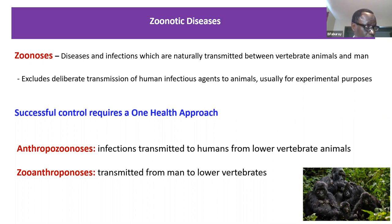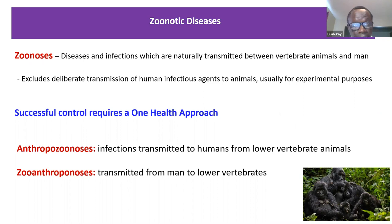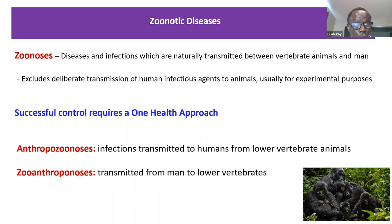Mountain gorillas in Rwanda nearly became extinct because of measles — transmitted from tourists visiting those places. It nearly wiped out their population. Even in the case of COVID-19, there was a case at the Bronx Zoo in New York where an attendant apparently transmitted COVID to a tiger, and subsequently the disease spread to other animals. This is significant from a One Health perspective. My background is with USDA at Plum Island, and I'm also a member of a CDC working group — it's being recognized that we have to put our heads together to effectively control disease.